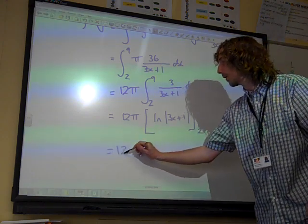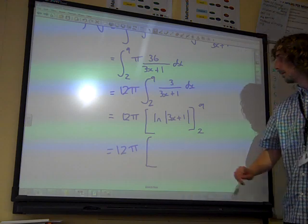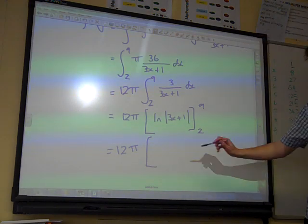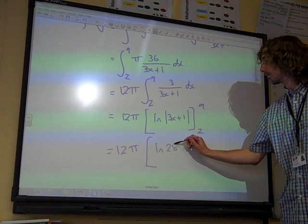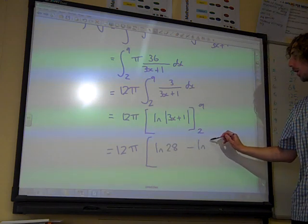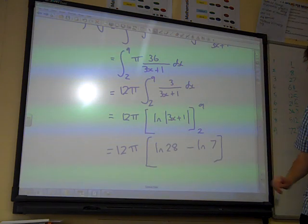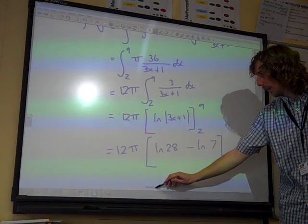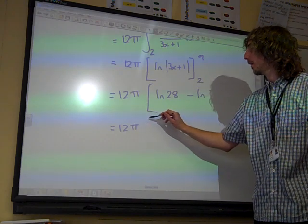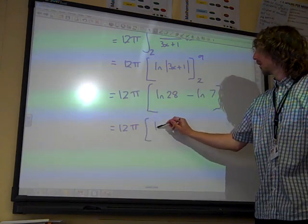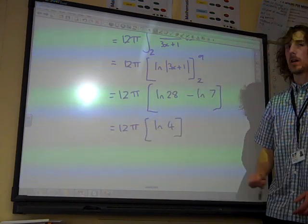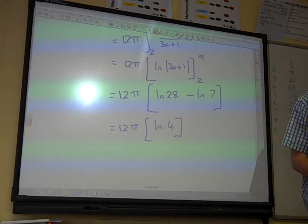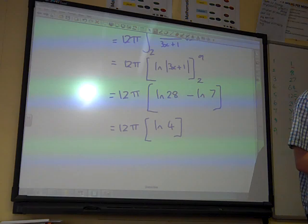We've got the 12 pi at the start, so we've got 12 pi times in these values, that's natural log of 28, take away the natural log of, do we have 7 for that? Bring it together, we've got 12 pi times natural log of 4, because 28 divided by 7 will leave us at 4.